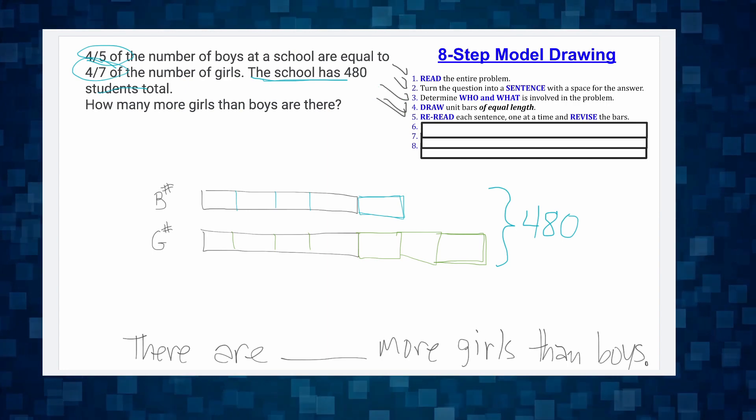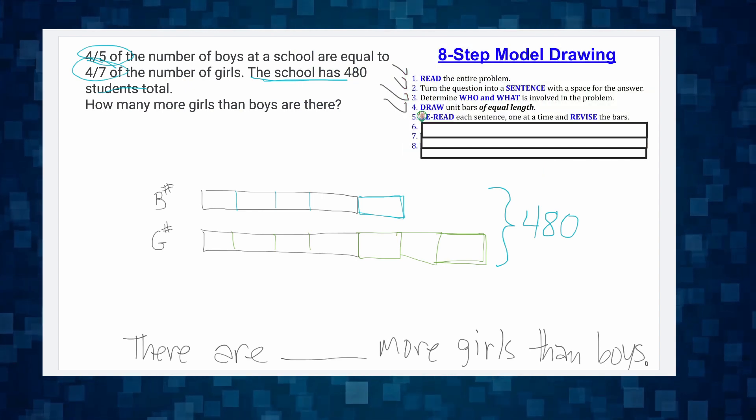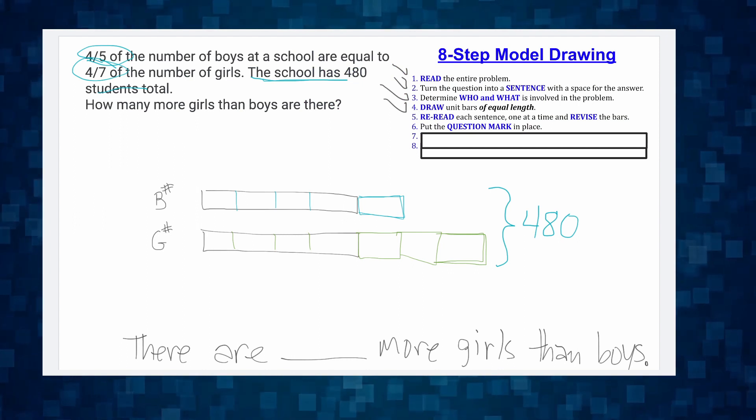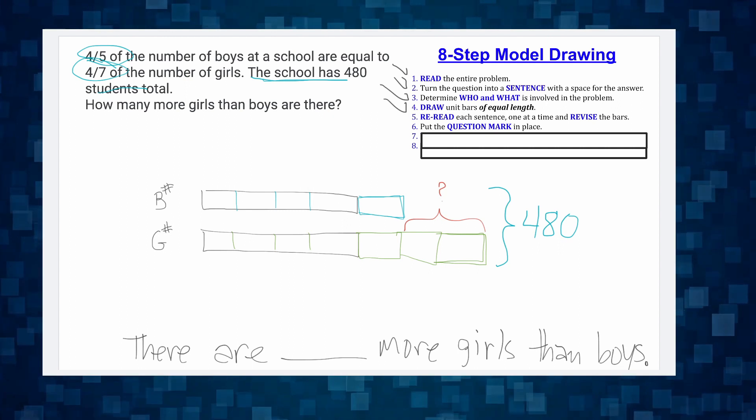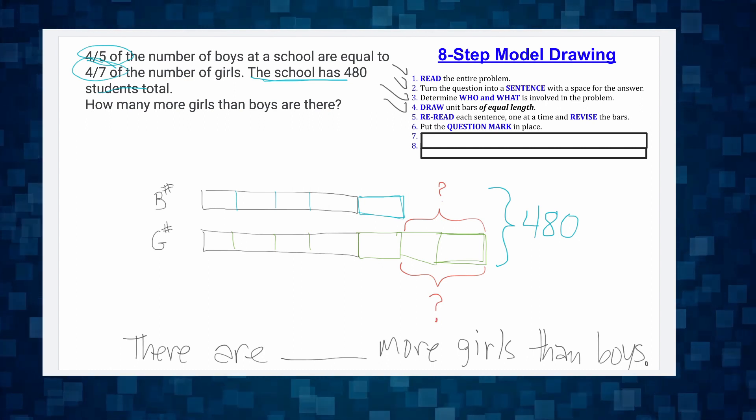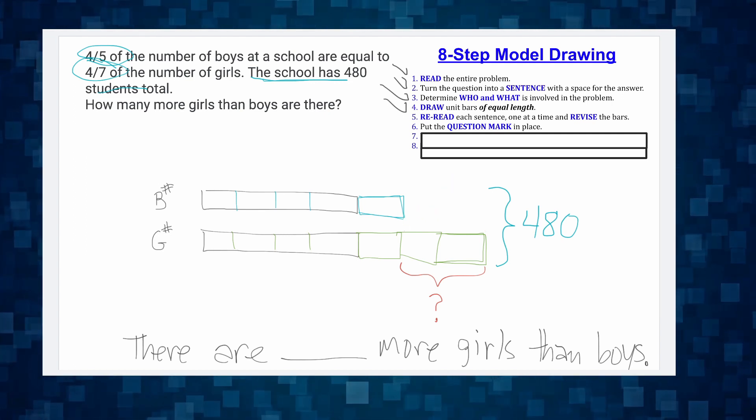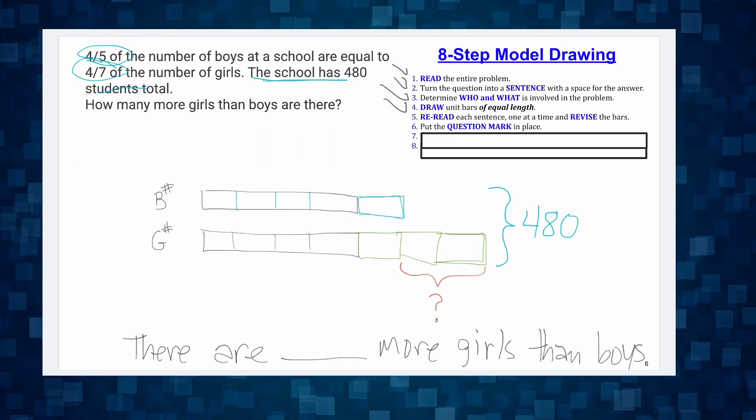And now, I'm going to get rid of that. Let's reveal step six. Step six says, put the question mark in place. So the question says, how many more girls than boys are there? So where does the answer to our question live? It lives right here. That is our question. That's where our question lives. Now we can put it above or we can put it below. I think I like it below better. So I'm going to zoom in and I'm going to erase my initial question mark. Now I'm ready for step seven.